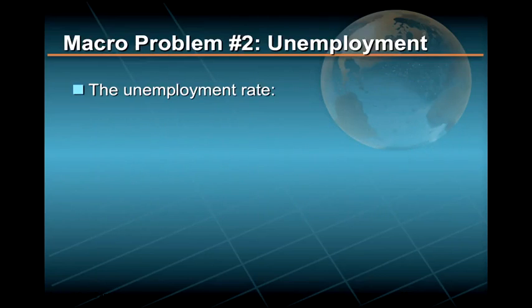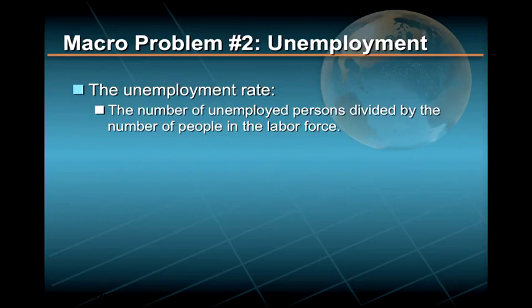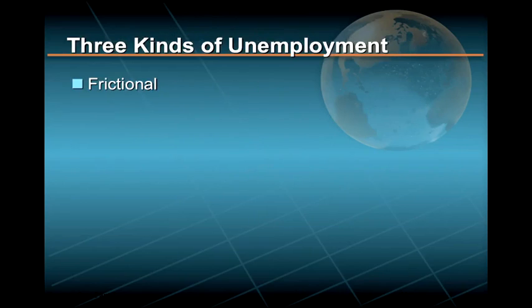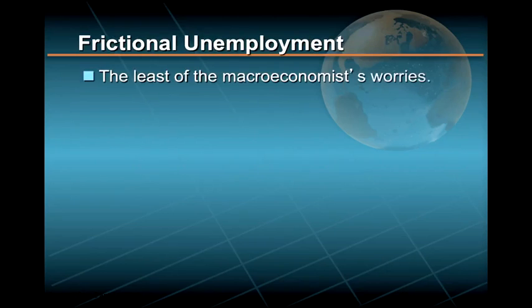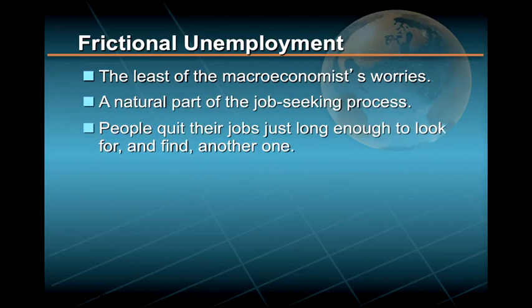Macroeconomic problem number two is unemployment. The unemployment rate is measured as the number of unemployed persons divided by the number of people in the labor force. Economists distinguish between three kinds: frictional, cyclical, and structural. Frictional unemployment is the least of the macroeconomist's worries — it occurs as a natural part of the job-seeking process as people quit their jobs just long enough to find another one.